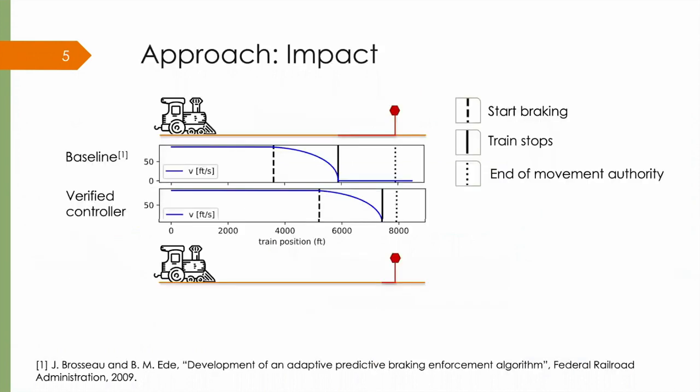This slide compares a numerical integration-based controller from the literature to the formally verified model in the present work. Because train dynamics is so intricate, the numerical integration-based controller conservatively stops over 2000 feet short of the end of movement authority. This is not very efficient.